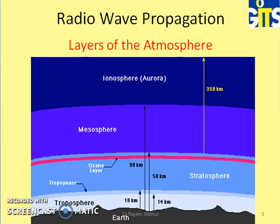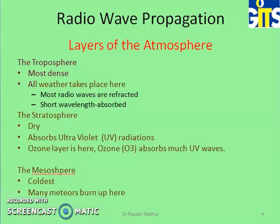Layers of atmosphere. There are four layers of atmosphere. In light blue near the earth's surface is the troposphere, which is up to 18 kilometers. The tropopause separates the stratosphere from the troposphere. The stratosphere is around 50 kilometers above the surface, and the ozone layer is also present there. Then we have the mesosphere, shown in light blue or purple color, and then we have the ionosphere.